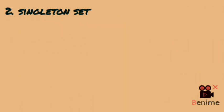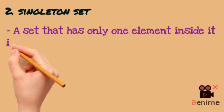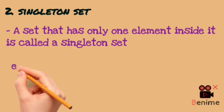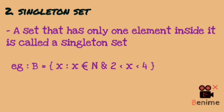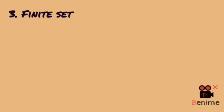Second, we have a singleton set. In a singleton set, only one element is found. For example, B = {x ∈ N | 2 < x < 4}. The only natural number between 2 and 4 is 3, so there is only one element — 3. This is a singleton set.